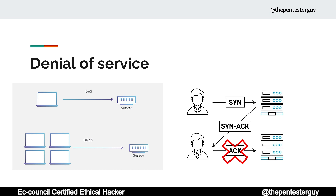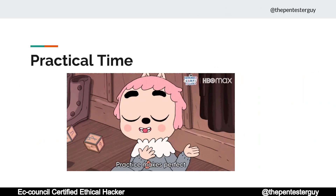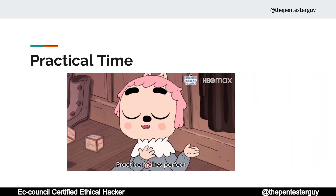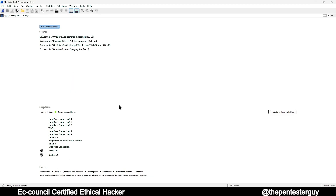In a DDoS scenario, you send the SYN packet to the target or victim, get a SYN-ACK, but never send the ACK packet. That's denial of service in a nutshell. Now it's practical time — let's get started. I have Wireshark installed on my Windows distro; you can install it on Kali Linux or Windows and follow along.